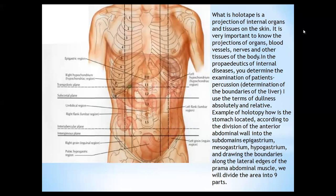What is holotopy? It is a projection of internal organs and tissues on the skin. It is very important to know how the projection of organs, blood vessels, nerves, and other tissues of the body. In the propedeutics of internal disease, you determine the examination of a patient's percussion — the determination of the boundaries of the liver. I use the terms of dullness: absolute and relative. Example of holotopy: how is the stomach located? According to the division of the anterior abdominal wall into the sub-abdominal epigastrium, mesogastrium, and drawing the boundaries along the lateral edges of the abdominal muscle, we will divide the areas into nine parts. It is the epigastric region, a sub-costal plane.